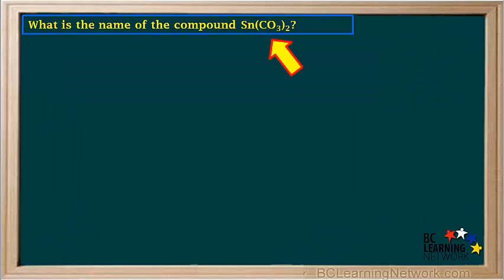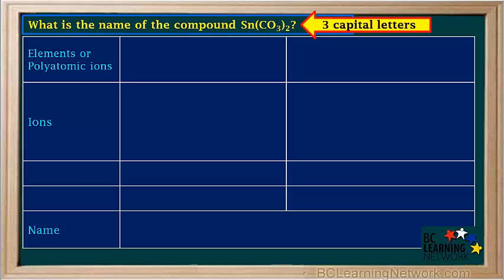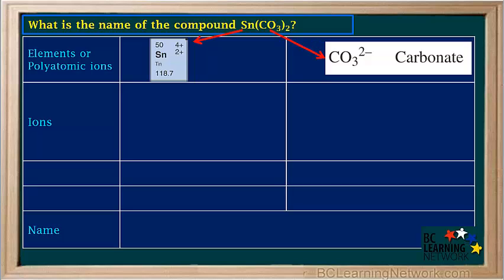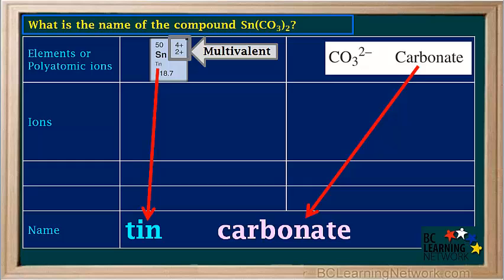Here's another example. What's the name of the compound Sn(CO3)2? We see that this formula contains three capital letters, so it must contain a polyatomic ion. We find the element tin, number 50, on the periodic table and the polyatomic ion carbonate on the ion table. We see that tin is multivalent, so we will need to find the charge the tin ion has in this compound and express it as a roman numeral. So the preliminary name is tin carbonate, and we leave a space after the word tin for the roman numeral once we find out what it is.